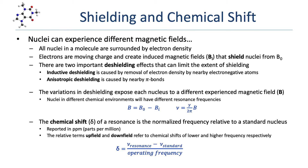Inductive deshielding is caused by removal of electron density by nearby electronegative atoms. Anisotropic deshielding is caused by nearby pi bonds, usually double bonds. The variations in deshielding expose each nucleus to a different experienced magnetic field, and that means that nuclei in different chemical environments will have different resonance frequencies. The B field experienced by each nucleus will simply be the applied field minus the induced magnetic field created by the electrons in the local chemical environment.